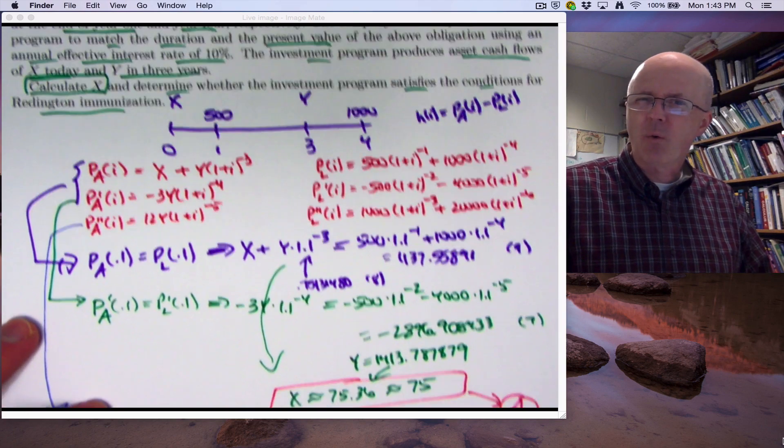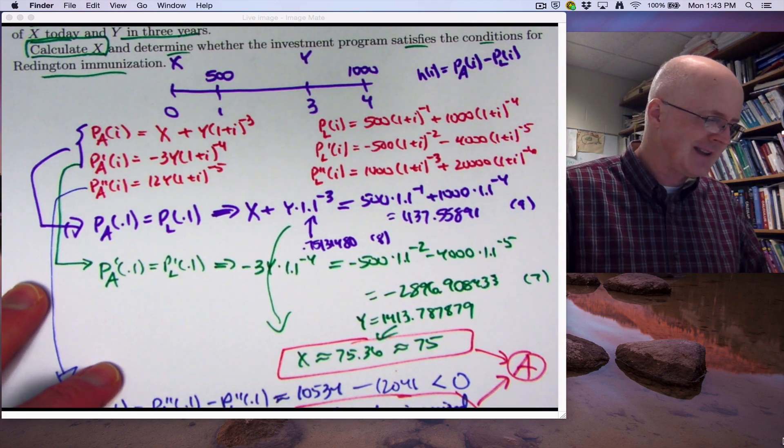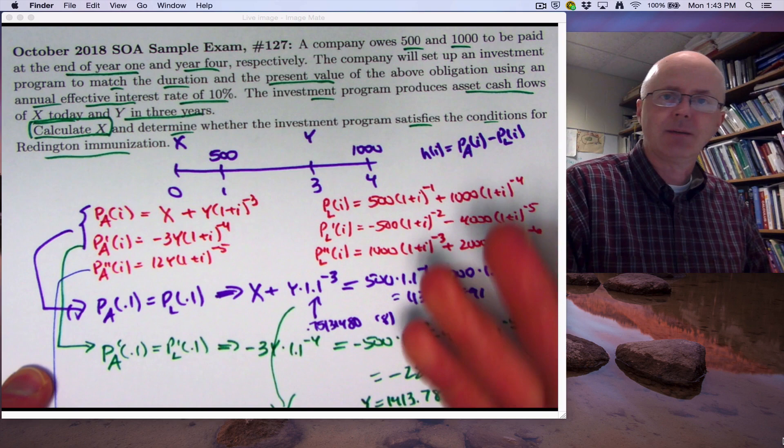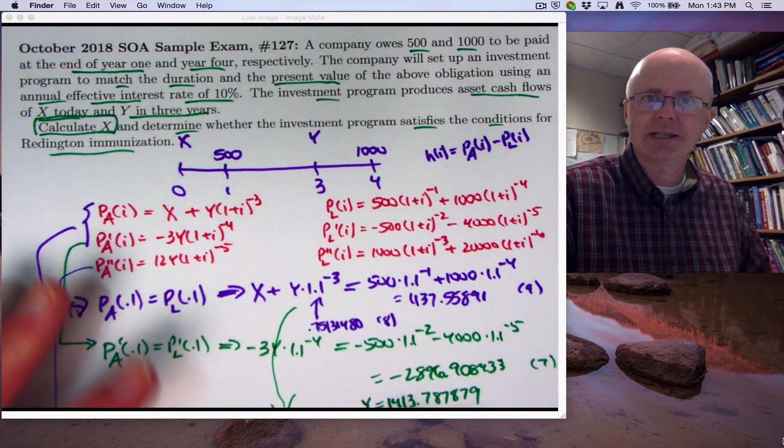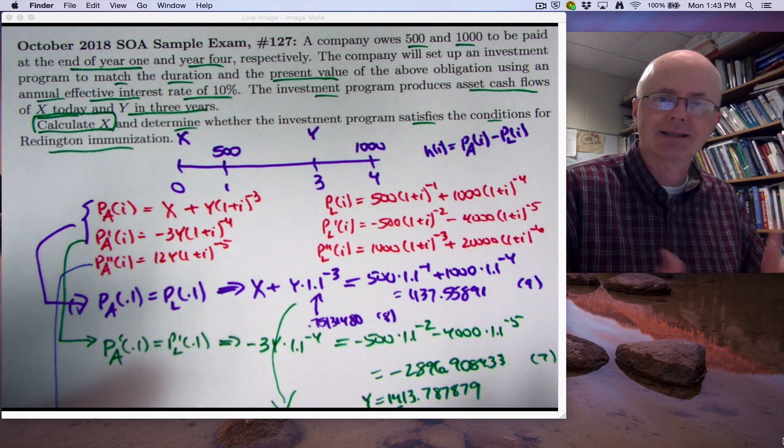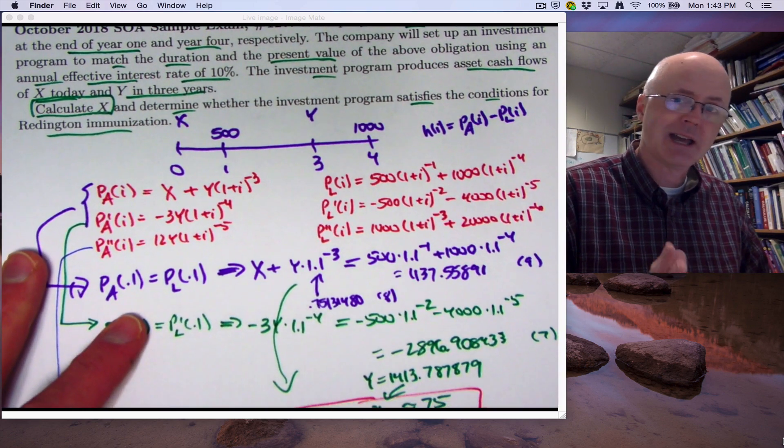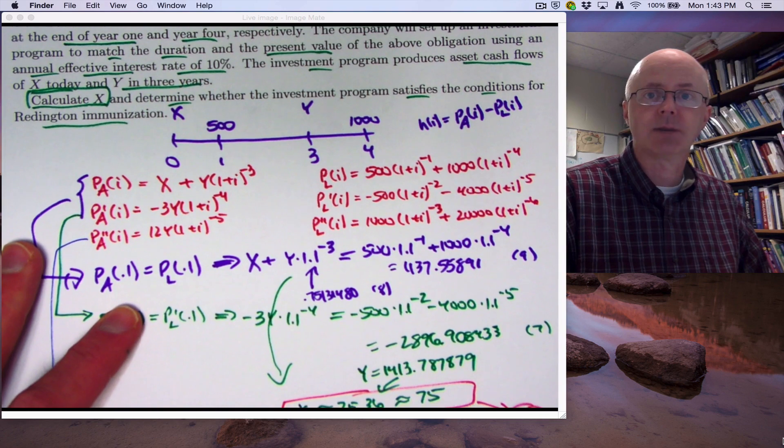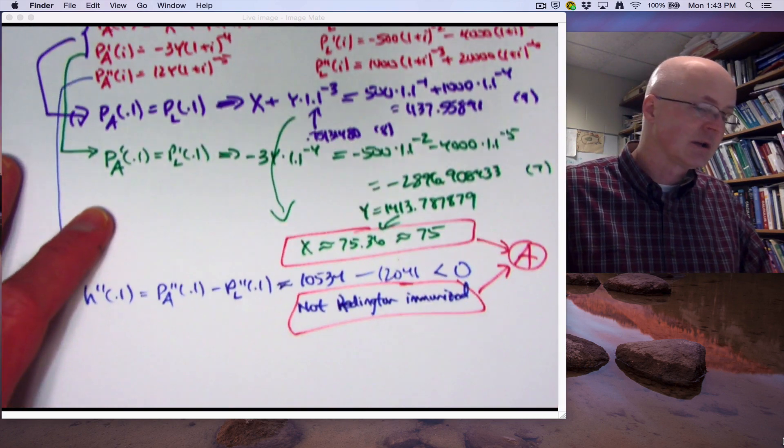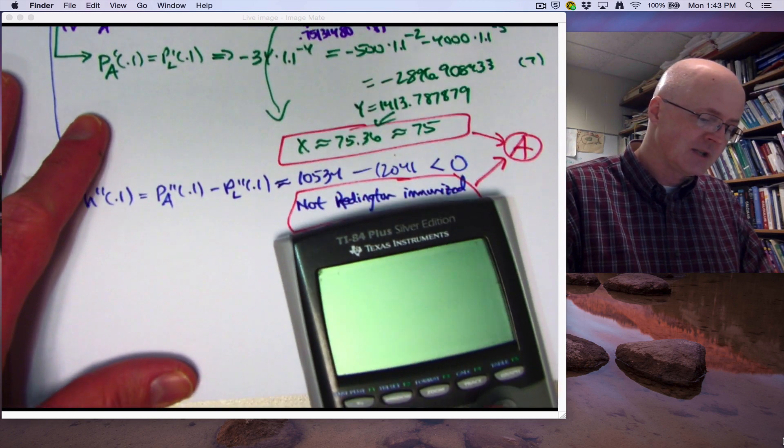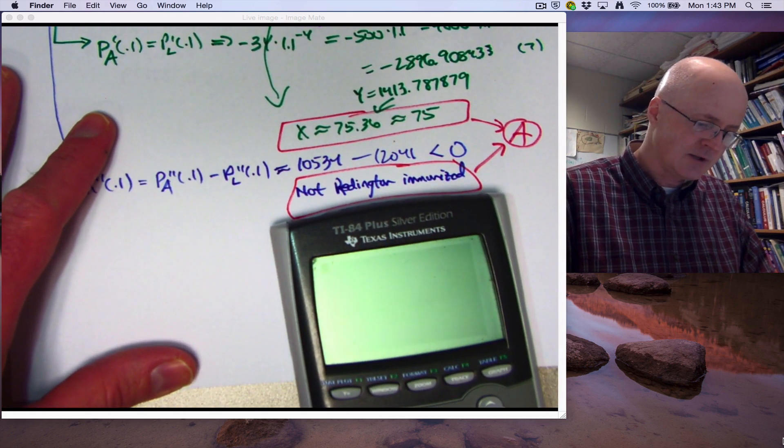Again, that could be made up for by making your asset cash flows bigger in this situation. But you might again wonder why. Why is it not possible to Reddington immunize this here? And is there some way to adjust it besides just increasing the cash flows to make the assets cover the liabilities? Again, I'll probably talk about that in my blog post at infinityisreallybig.com. And again, either next video or in a couple videos, I'll look into that with Mathematica.